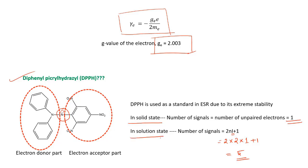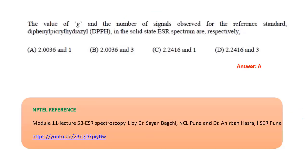So in solution state, ESR signals of DPPH will be 5, and in solid state it will be 1. Our question was the value of g and the number of signals observed for the reference standard diphenyl picryl hydrazyl in solid state ESR spectrum.